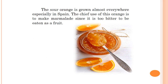The sour orange is grown almost everywhere, especially in Spain. The chief use of this orange is to make marmalade, since it is too bitter to be eaten as a fruit. Marmalade is a kind of jam, but unlike jam it contains fruit pieces. It's like what we call in Gujarati 'chundo' or in Hindi 'murabba', and it is made of citrus fruits, mostly orange or lemon.